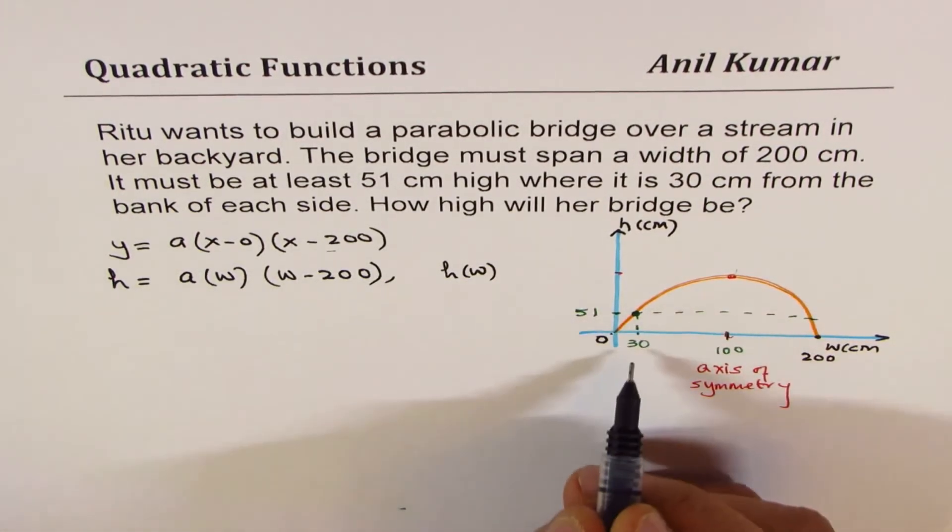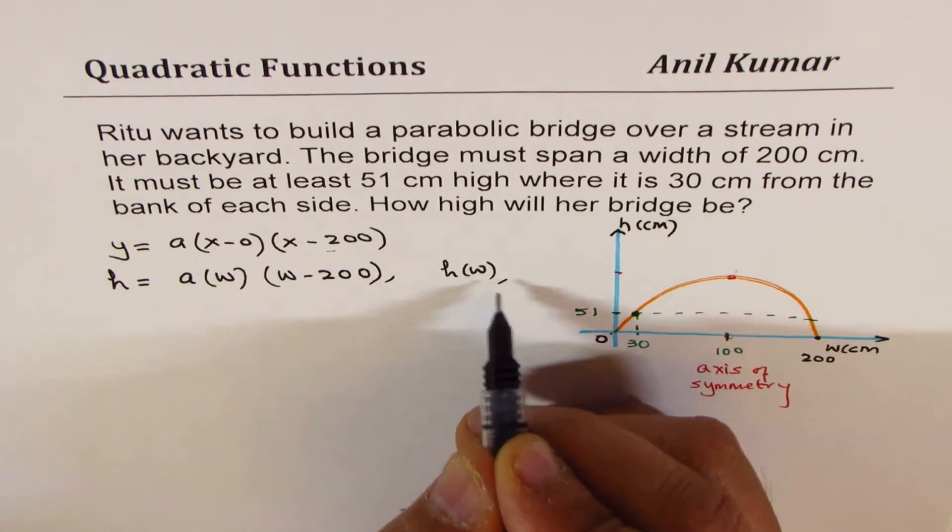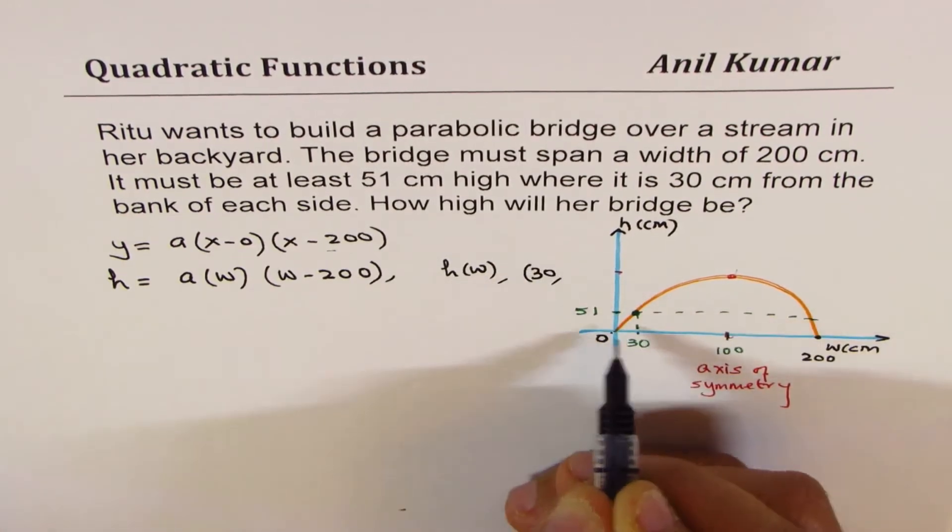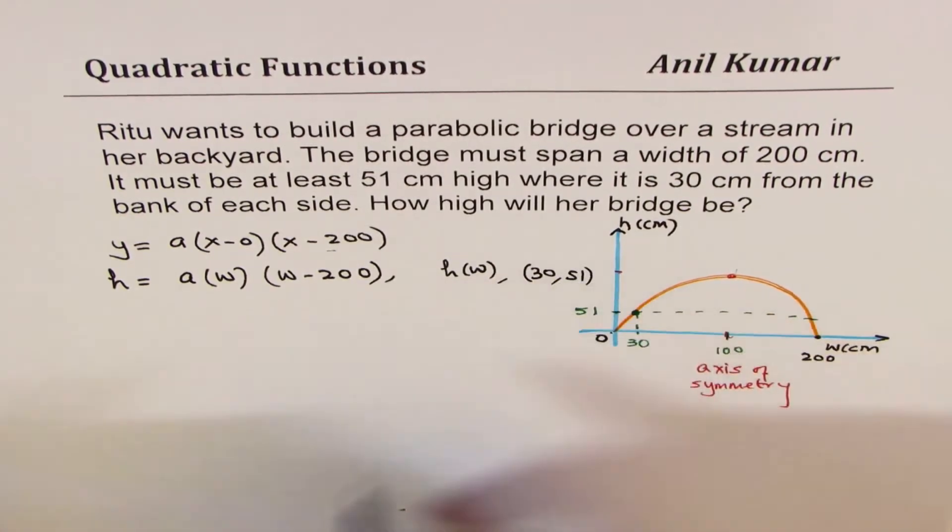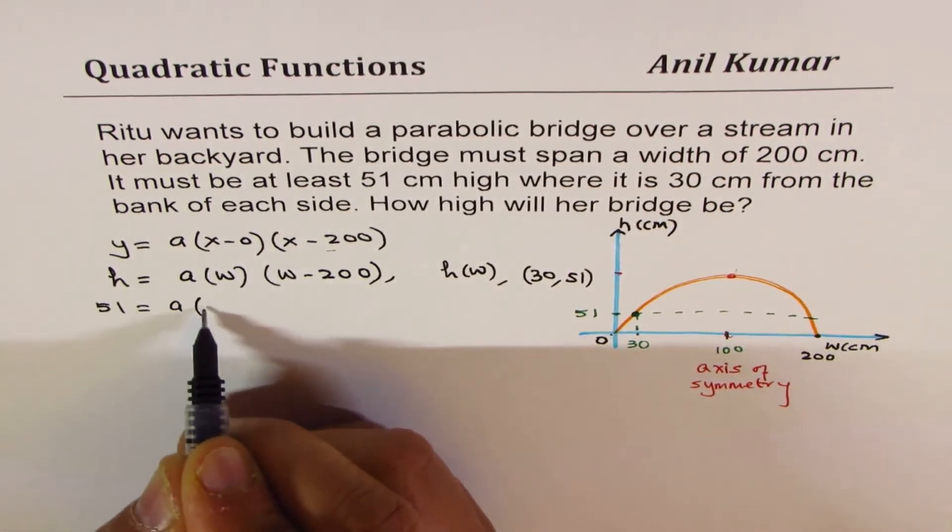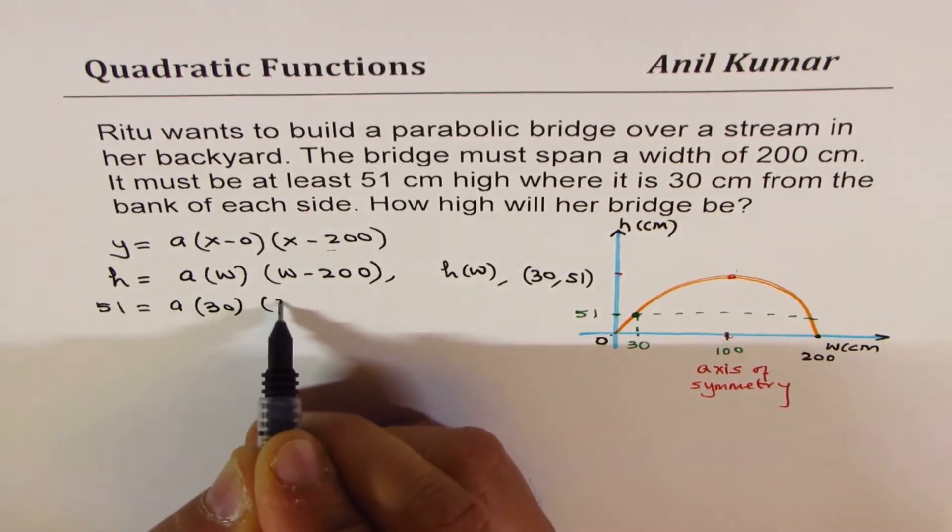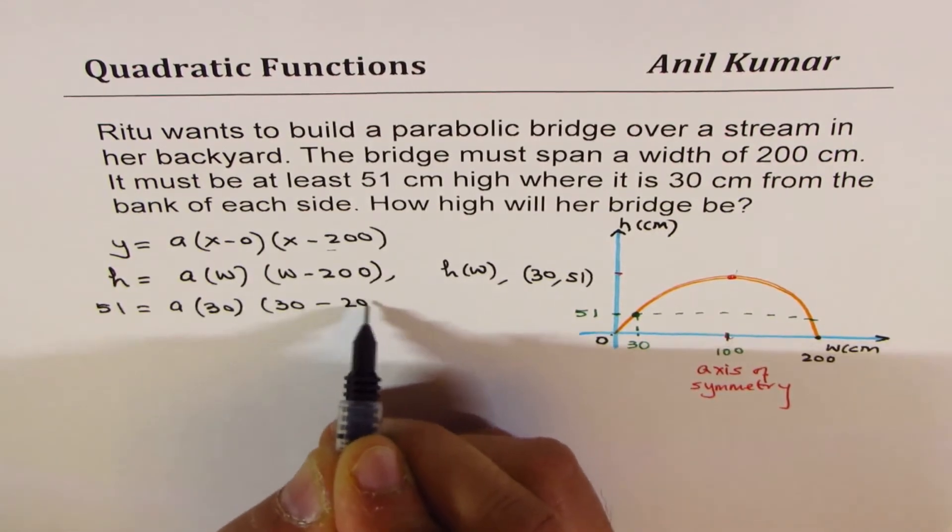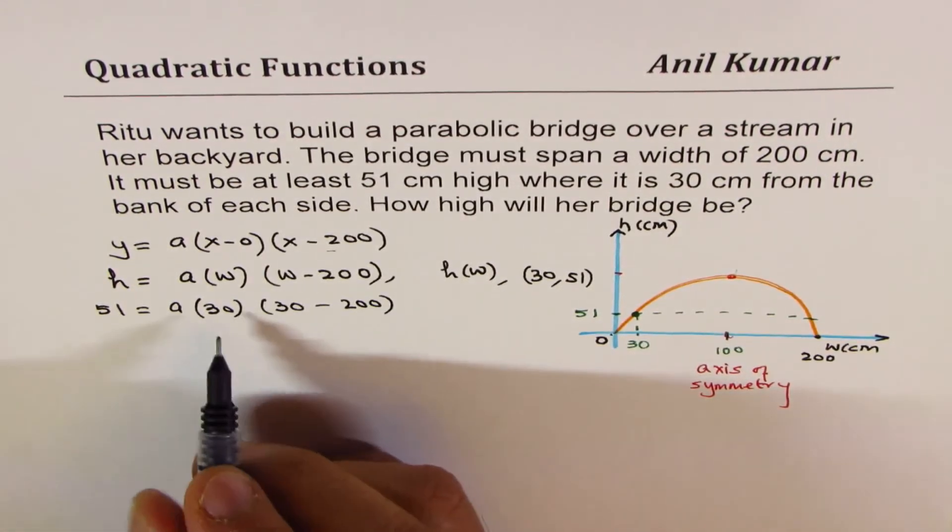If I substitute width as 30, that is to say the point will be 30 and 51, height is 51. So we get 51 equals to a times 30 times 30 minus 200.